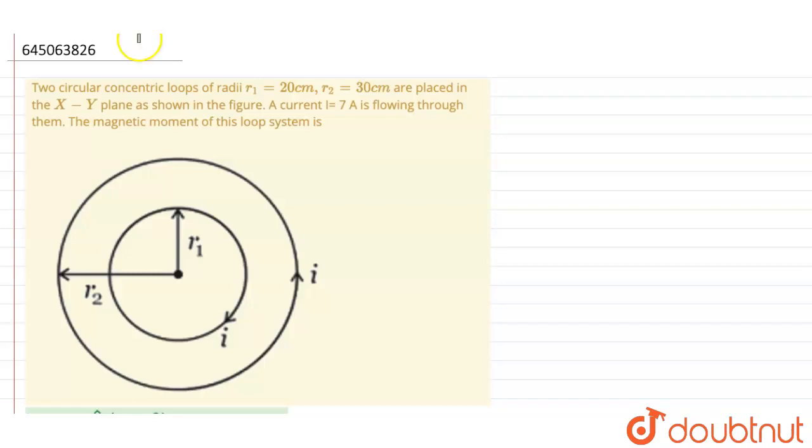Two circular concentric loops with r1 = 20 centimeters and r2 = 30 centimeters are placed in the X-Y plane as shown in the figure. The current i = 7 amperes is flowing through them. The magnetic moment of the loop system is, the current is constant which is 7 amperes in both.